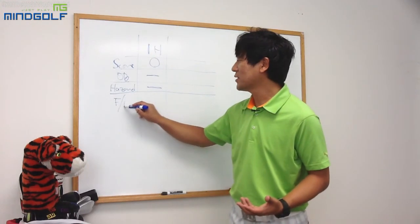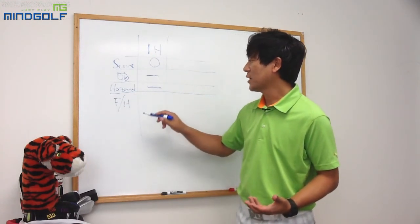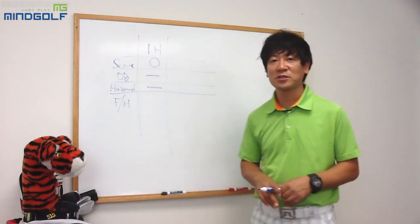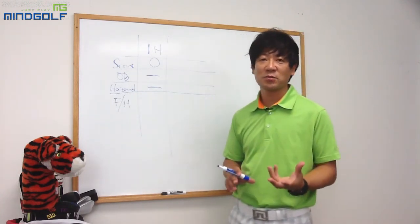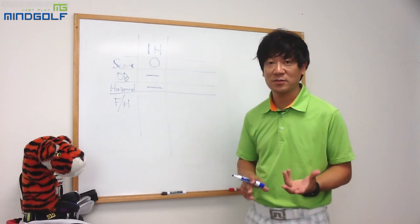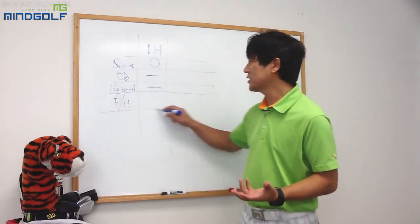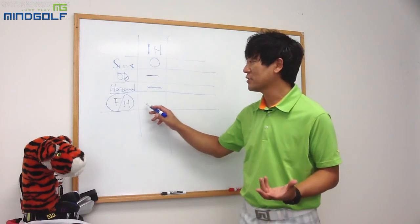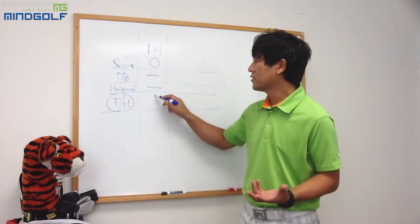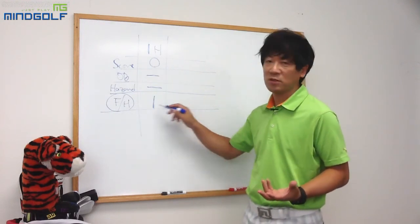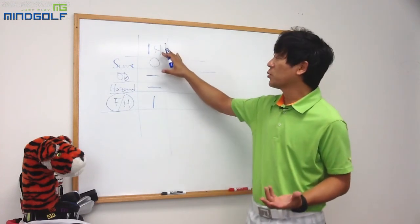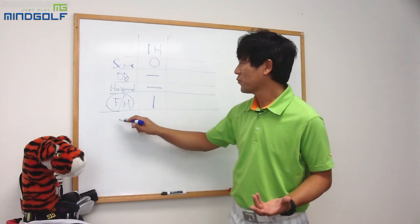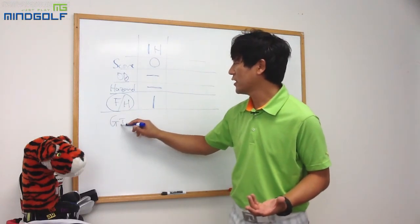그 다음 페어웨이 히트가 있습니다. 페어웨이 히트는 티샷을 한 공이 페어웨이에 떨어졌는지 여부입니다. 드라이버뿐 아니라 3번 우드나 아이언으로 티샷을 해도 페어웨이에 떨어졌으면 1, 아니면 마이너스로 표시합니다. 그 다음에 G.I.R.을 표시합니다.